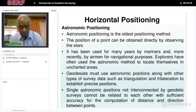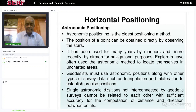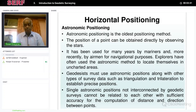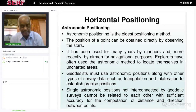Astronomic positioning is the oldest positioning method and has been used by the Survey of India since 1780. The whole of India has been surveyed by the British starting from 1780, and it was completed after 100 years in 1880. That is how the Survey of India maps, which are still available now, were made.